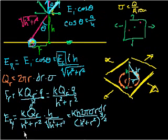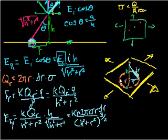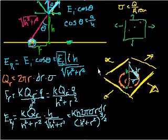So we have just calculated the y component — the vertical component — of the electric field at h units above the plate, generated by a ring of radius r. Now we can integrate across the entire plane: sum up all the rings from radius zero out to infinity. That'll give us the net electric field h units above the surface of the plate. See you in the next video.